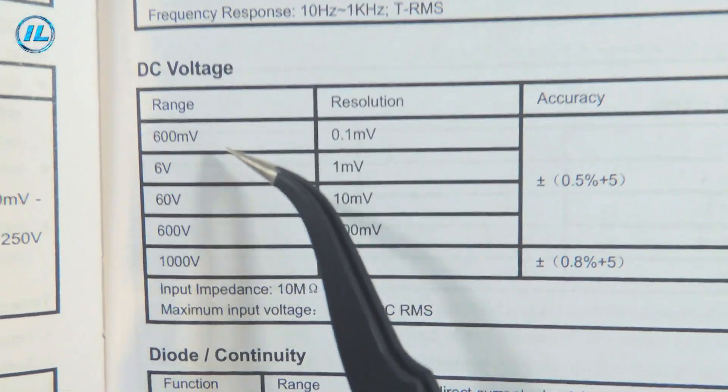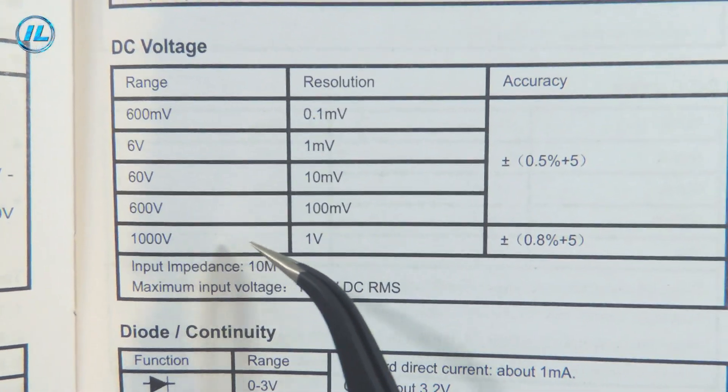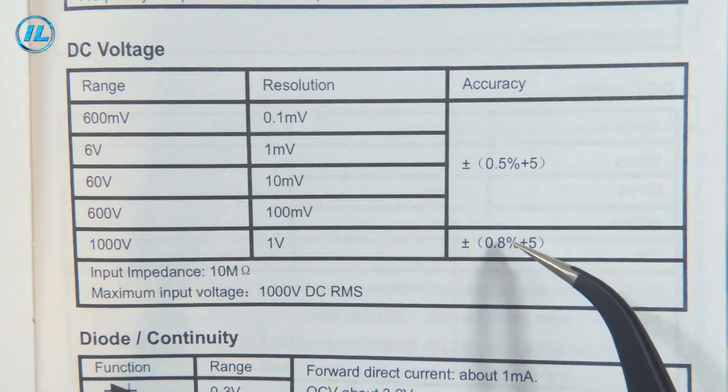Next is the measurement of a constant voltage up to 1000 volts. The margin of error is 0.8 percent. In the main range the margin of error is 0.5 percent.